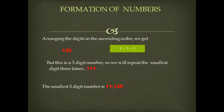Now, arranging the digits in the ascending order, we will get 1, 3, 5. 1 is less than 3 is less than 5. But this is a three-digit number. So we will repeat the smallest digit three times. The smallest digit here is 1. We will repeat it three times and we will get the smallest five-digit number to be 11,135.